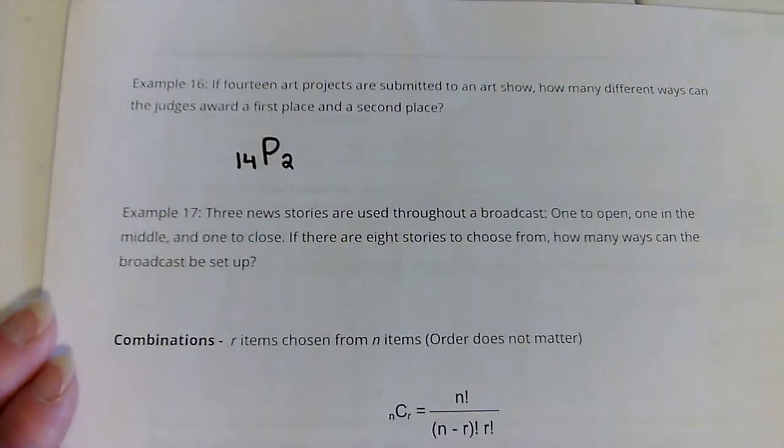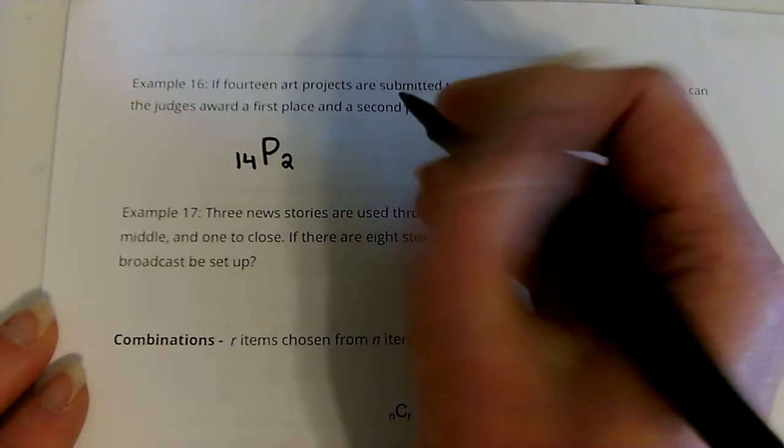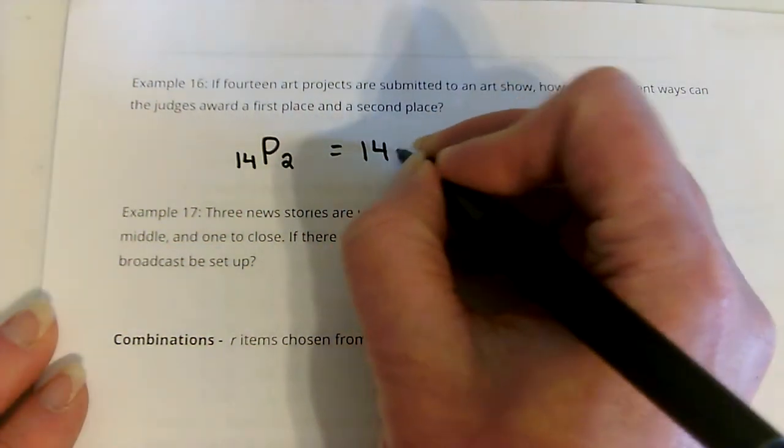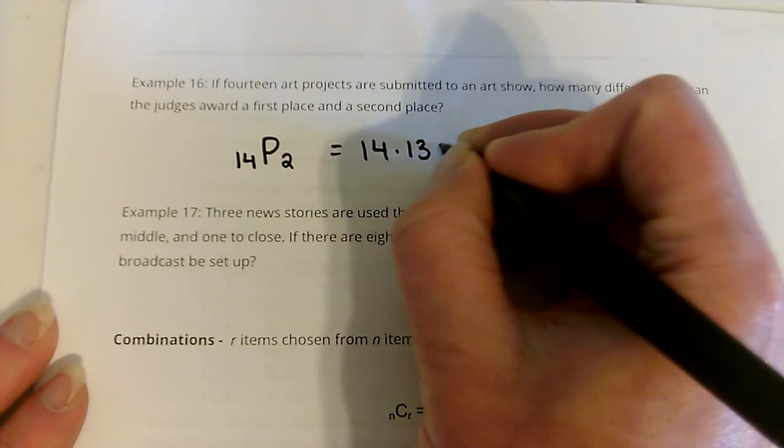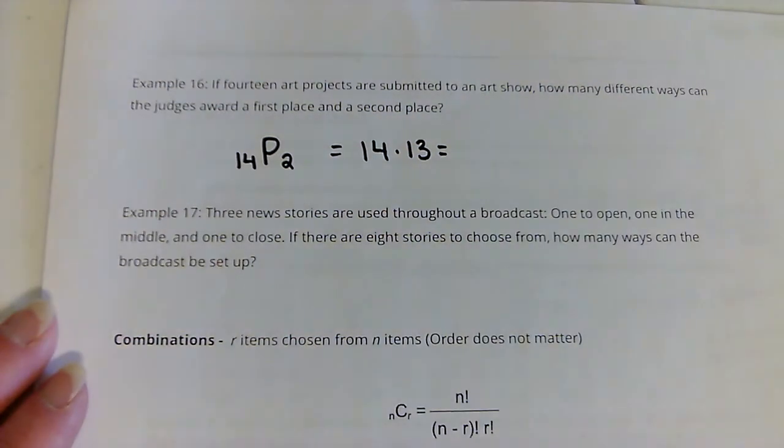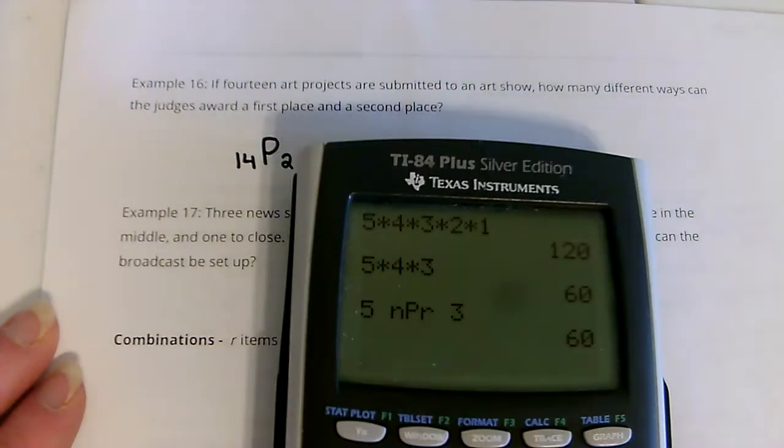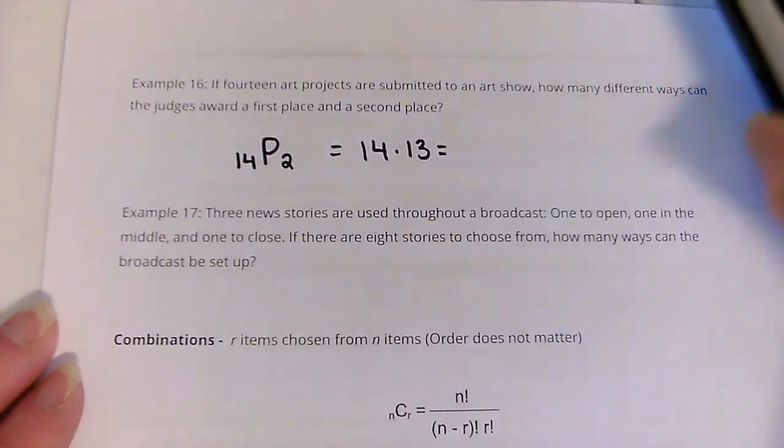Now, you can use the calculator, but this one's kind of easy because you're only picking 2. This is really just 14 times 13. Because you're not going further than that. That's 182.